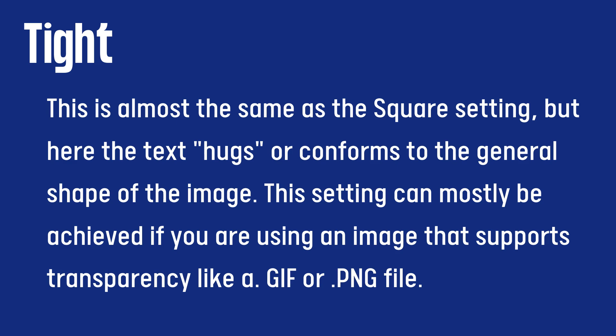Tight. This is almost the same as the square setting, but here the text hugs or conforms to the general shape of the image. This setting can mostly be achieved if you are using an image that supports transparency, like a GIF or PNG file.